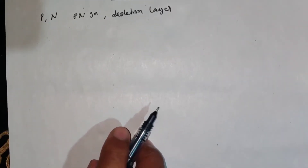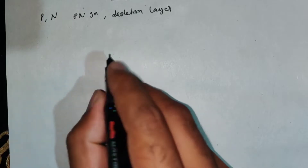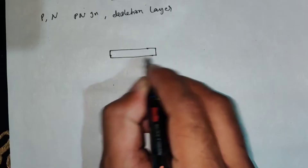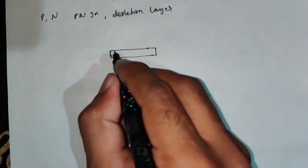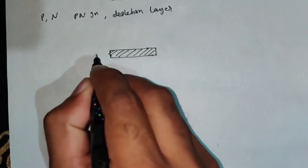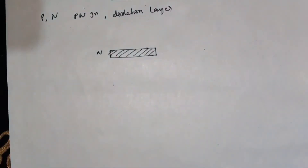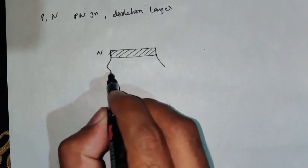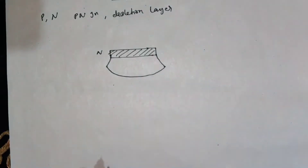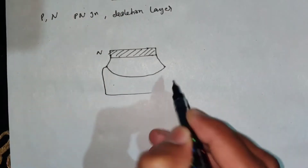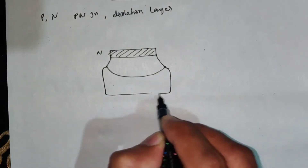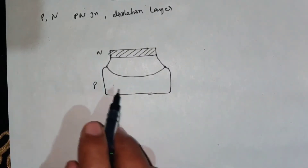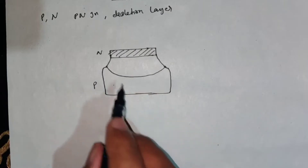Let's take a look at the PIN junction. This is a diagram. This is the N region - these are electrons. This PIN has a depletion layer. This is a P region. The P region has holes and the N region has electrons as majority charge carriers.